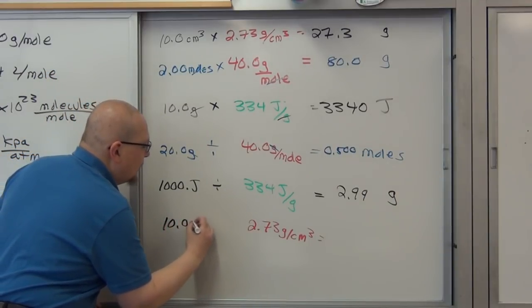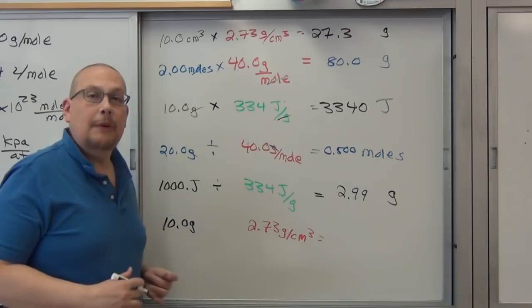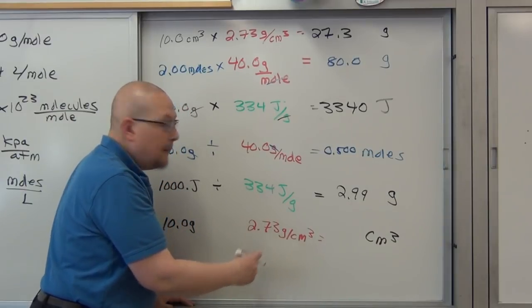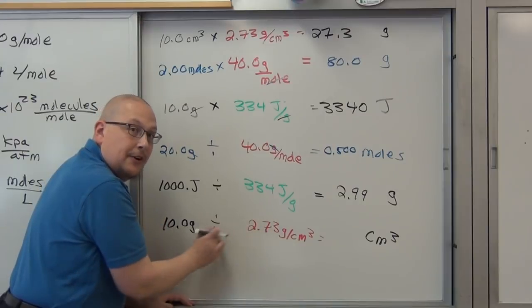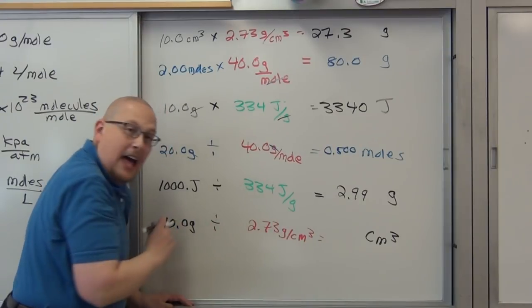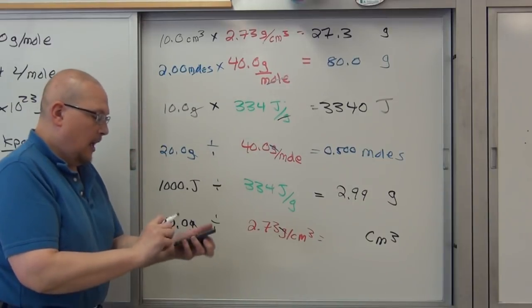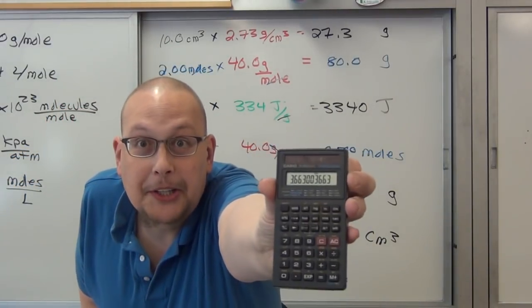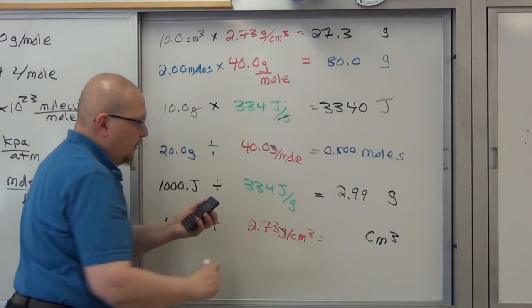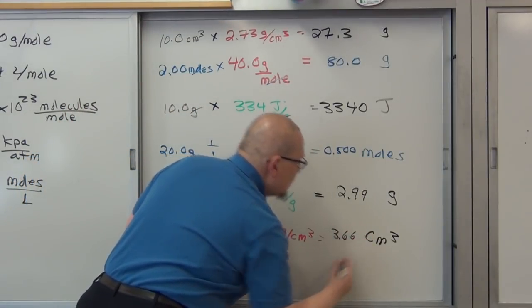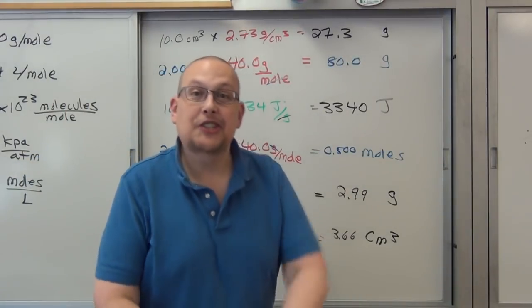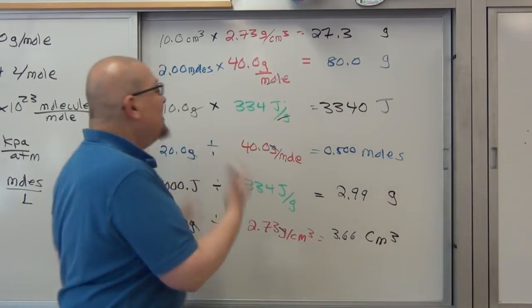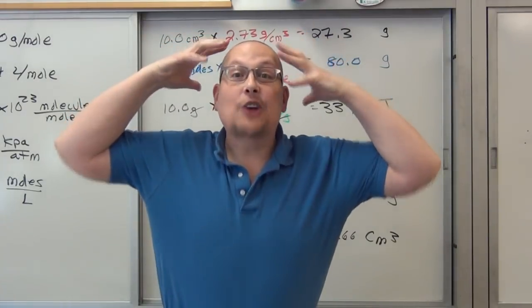Now suppose we have 10.0 grams of aluminum and we want to find out how much volume it will occupy. We're solving for the denominator, so we divide. Grams go bye-bye, and 10.0 divided by 2.73 gives us 3.66 cubic centimeters. You didn't even need to use that stupid triangle or density equals mass over volume. You didn't have to do any algebra at all, because density is just a conversion factor — that's all it is.